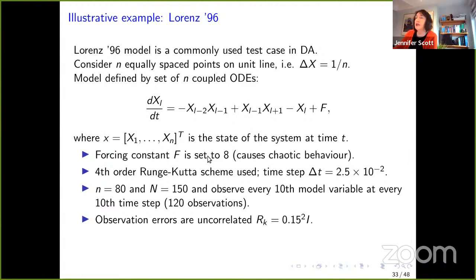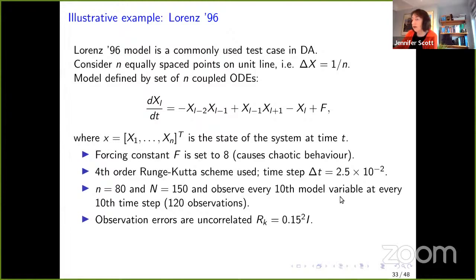We use the Lorenz 96 model, commonly used in data assimilation, with n equally spaced points in a line. We solve a set of n coupled ordinary differential equations, where F is the forcing constant, set to 8 in our experiments — a typical value known to cause chaotic behaviour. We solve using a fourth-order Runge-Kutta scheme. In this experiment, n = 80, N = 150 time steps, we observe every 10th model variable at every 10th time step, making 120 observations in total, with uncorrelated observation errors.